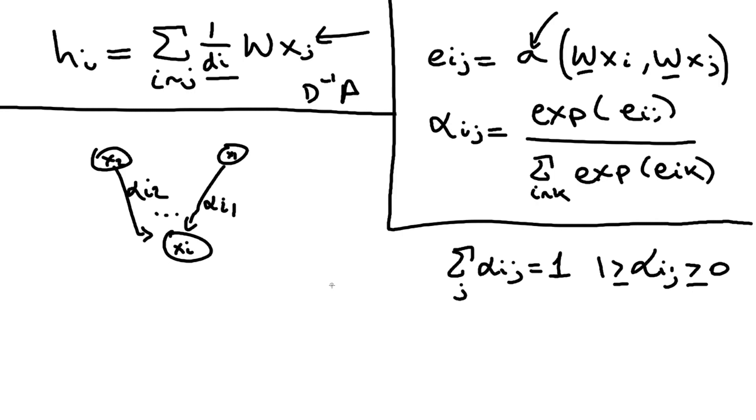The hope is that the model is able to learn that for whatever reason this ij pair is very important, so I'm going to give lots of mass to this connection, and this other one is maybe not as important, so I'm not going to give it so much mass.